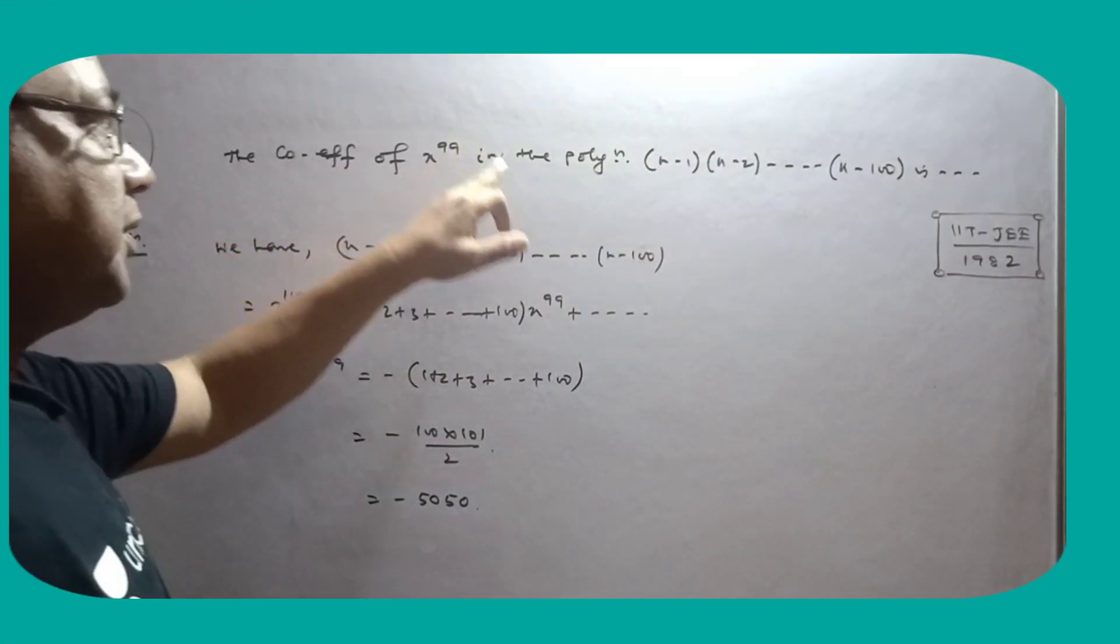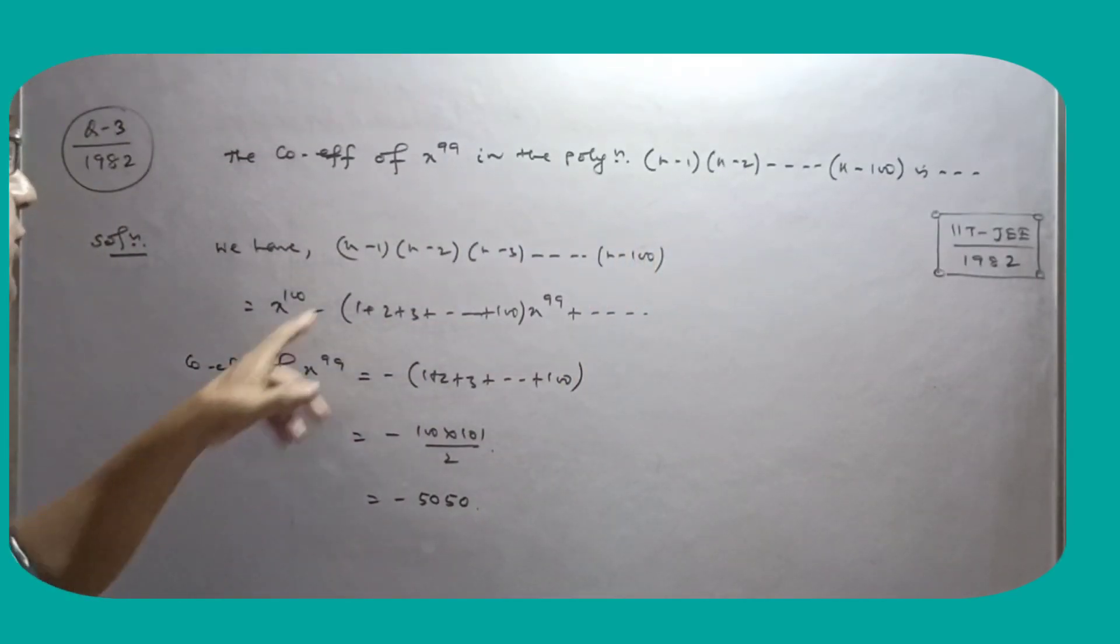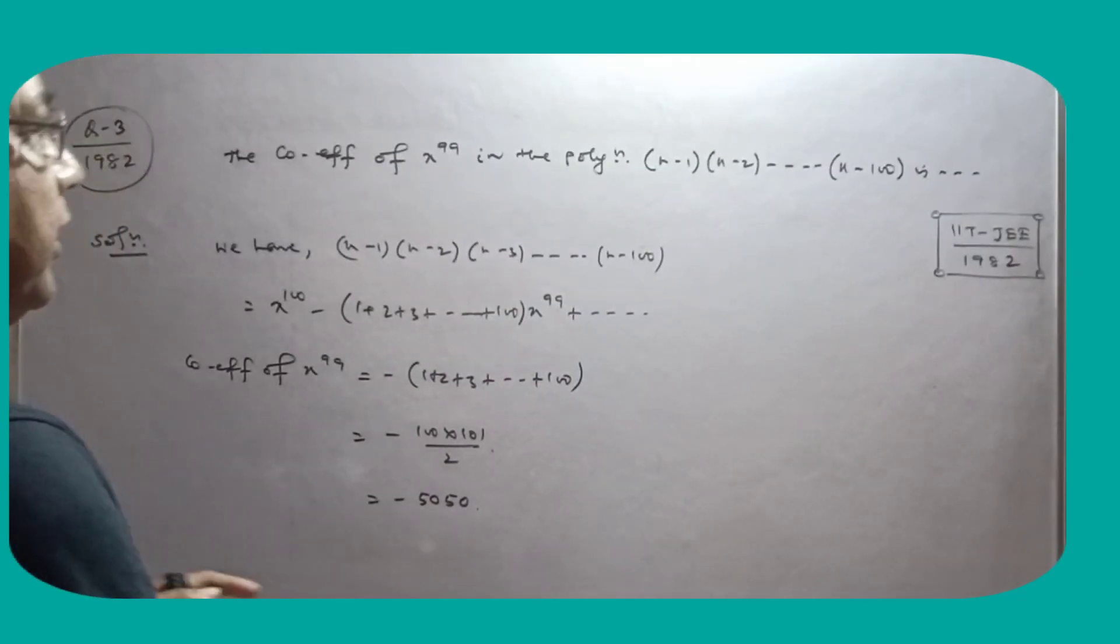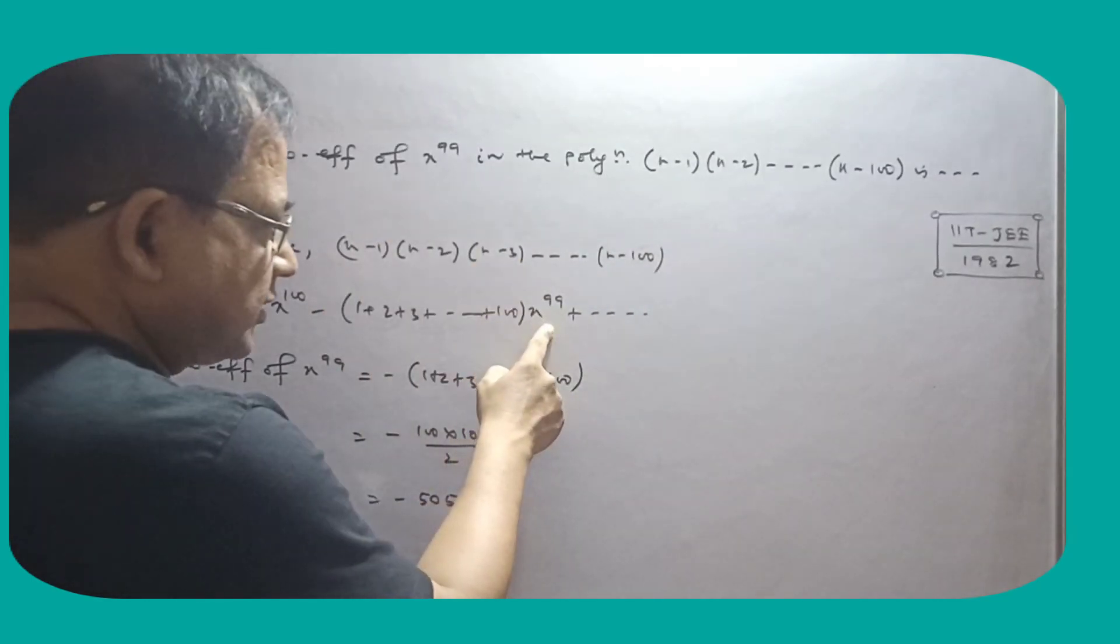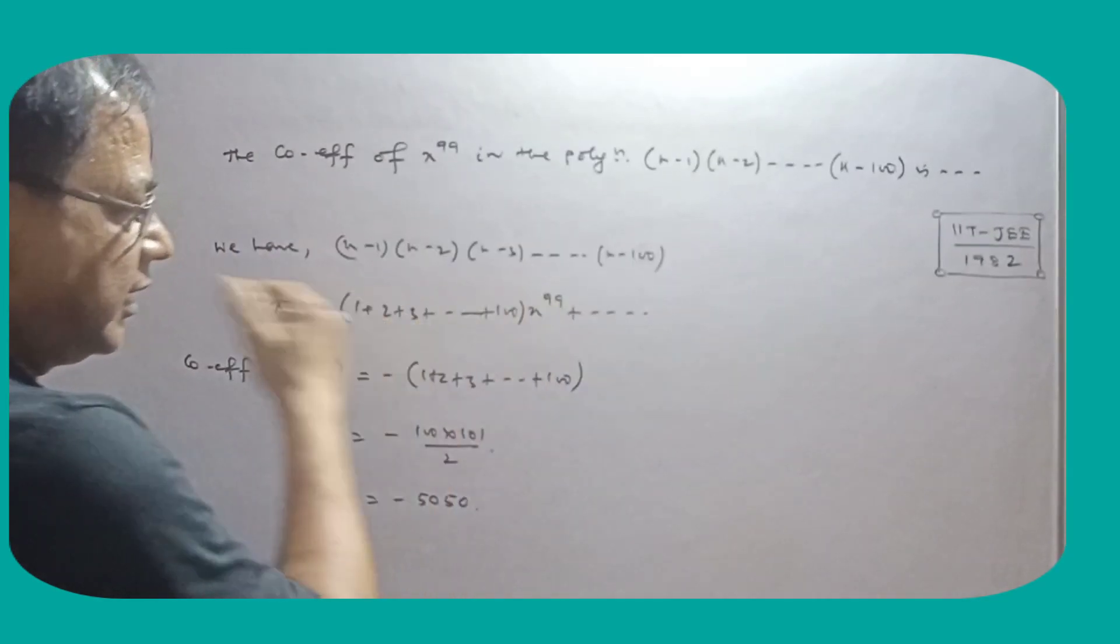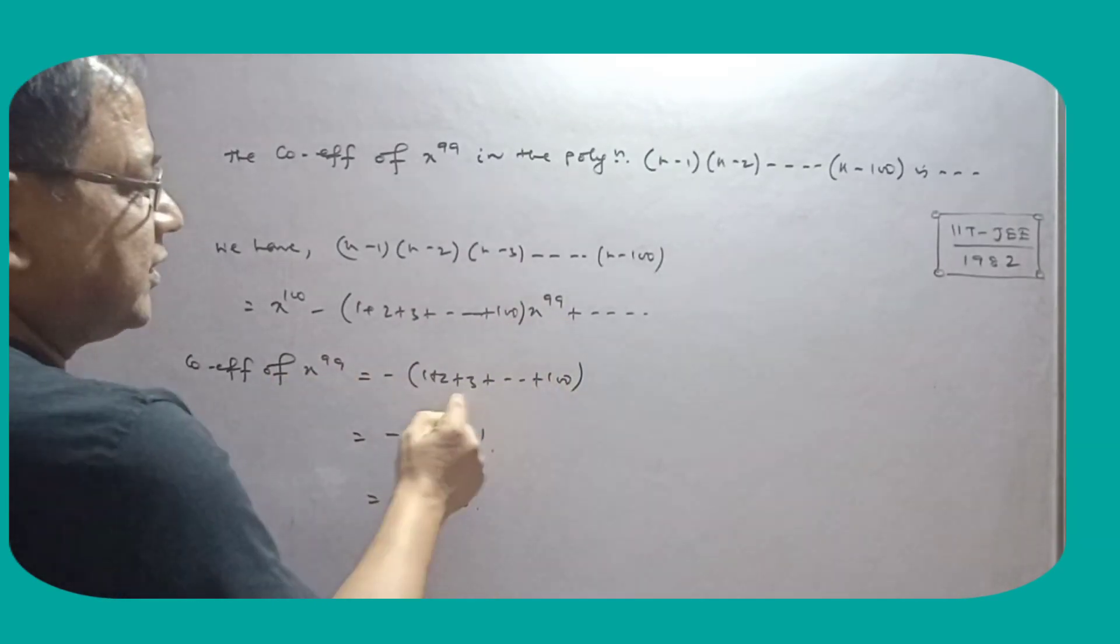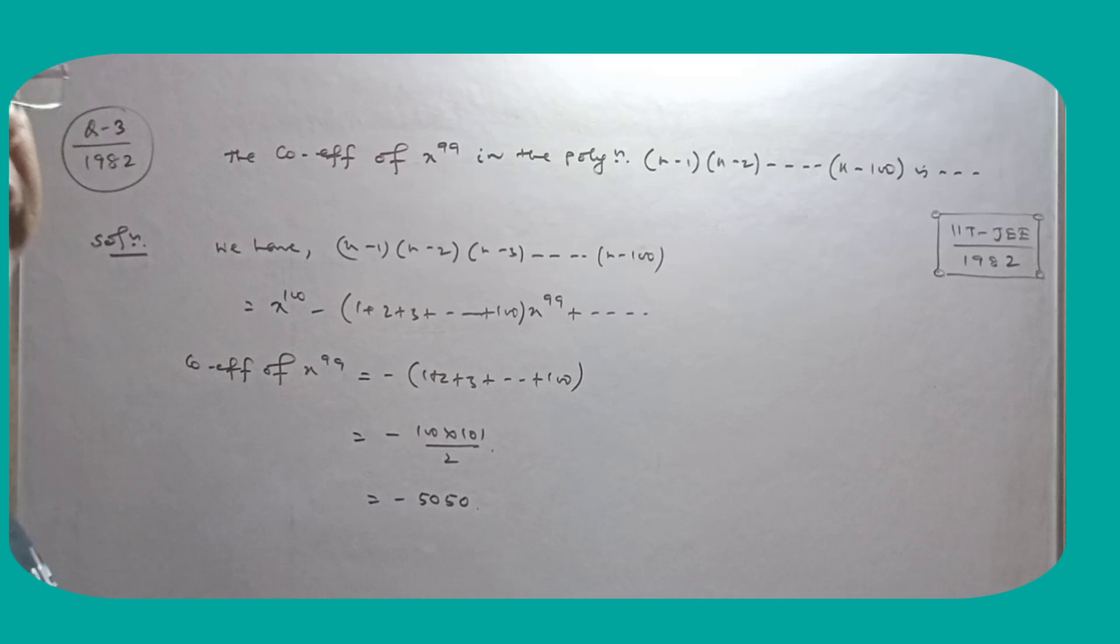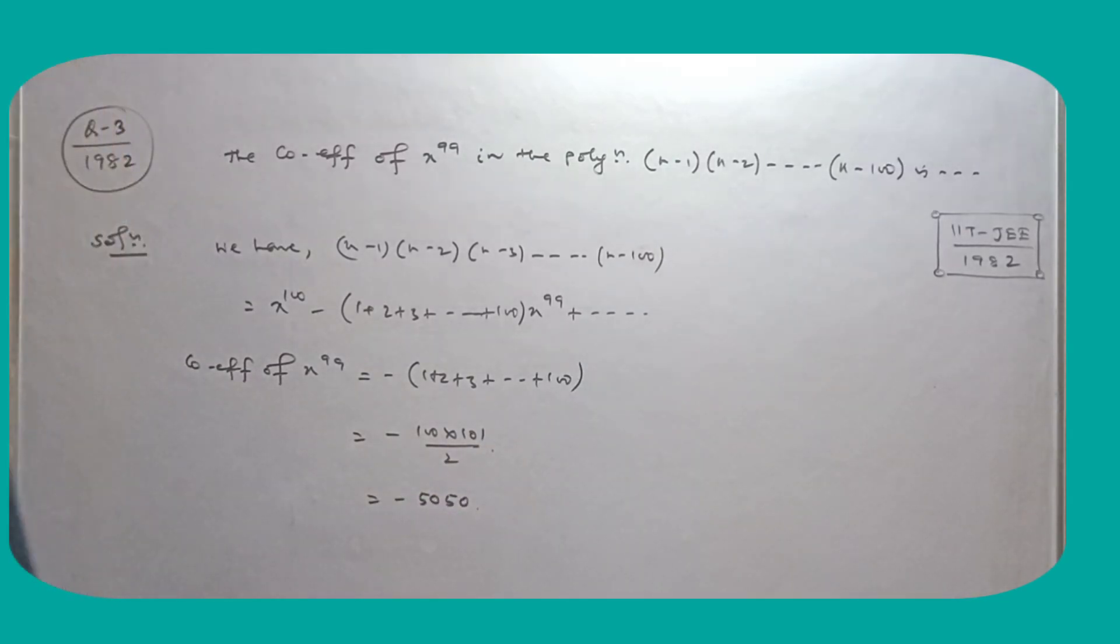Find the coefficient of x to the power 99 in this polynomial. Break it: there are 100 terms, so x to the power 100, then x to the power 99. The coefficient equals the sum of first 100 natural numbers: n into n+1 by 2, which is 100 into 101 by 2.